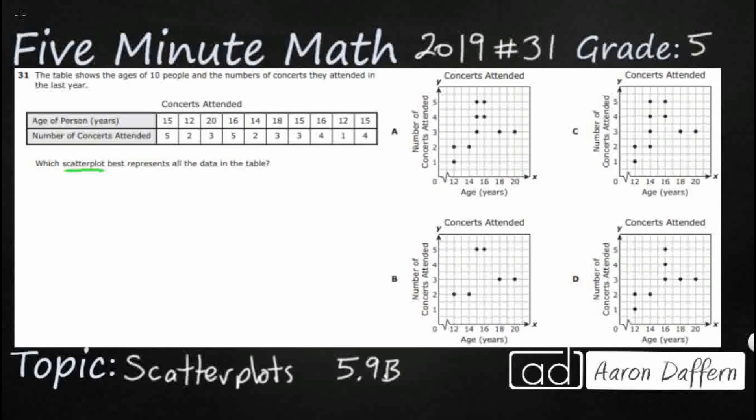And so our scatter plot is going to look remarkably like a coordinate plane. The age in years, you notice that here, is going to be our x-axis, our horizontal x-axis. So I'm just going to put an x right there. And then the number of concerts attended, as we can see, that's going to be our y-axis for all of these here.